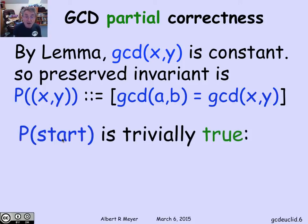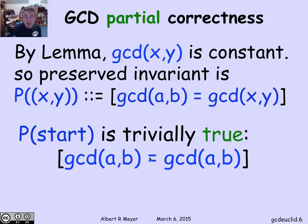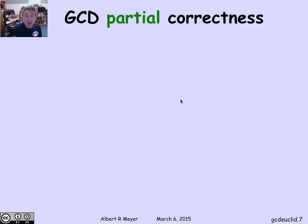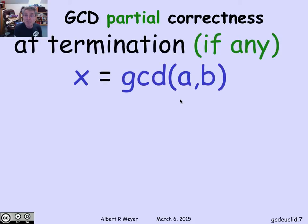Moreover, p of start is trivially true, because at the start, x and y are a equals b. So p of x and y is just saying that GCD of a and b is equal to GCD of a and b. So I've got that this property is true at the start, and it's preserved by the transitions. The invariance principle tells me that if the program stops, I'm going to have the GCD of x and y when it terminates is equal to the actual GCD that I want. And that enables us to prove partial correctness.